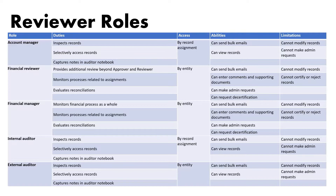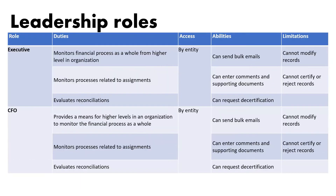The next set is the internal auditor and external auditor. Sometimes auditors request information like reconciliation or journal entries. These auditors will get direct access to Blackline, eliminating the need for preparers to share information by email. The leadership role works at the whole entity level, with access generally driven at the top level of the organization.